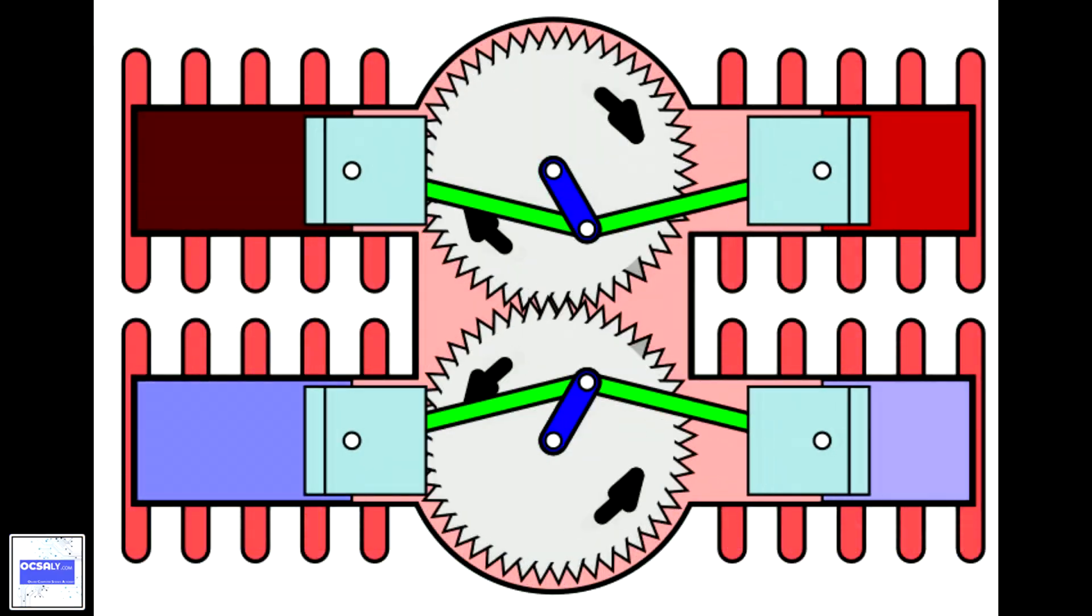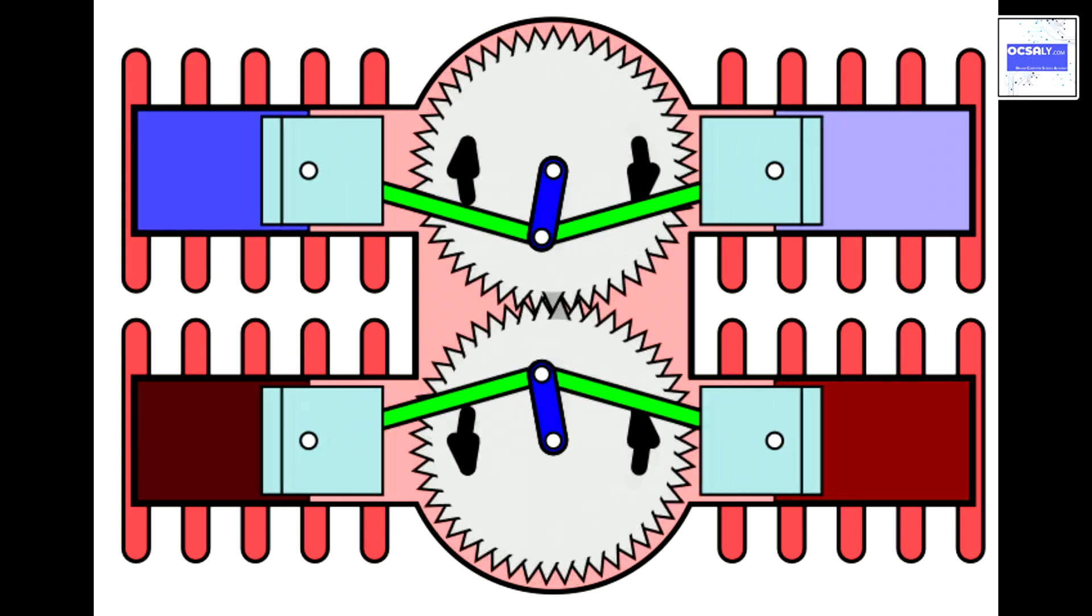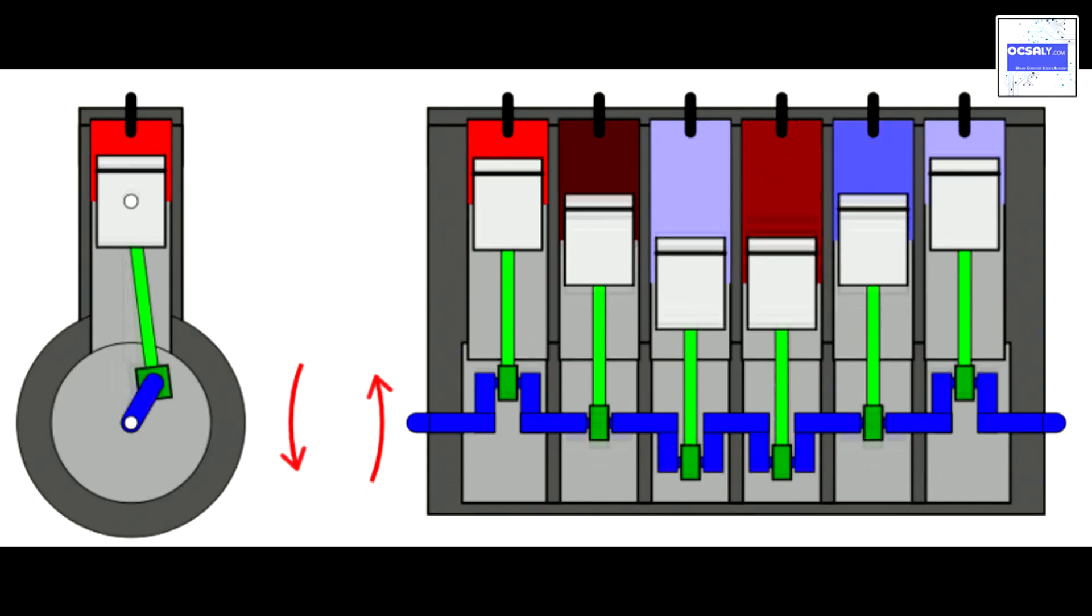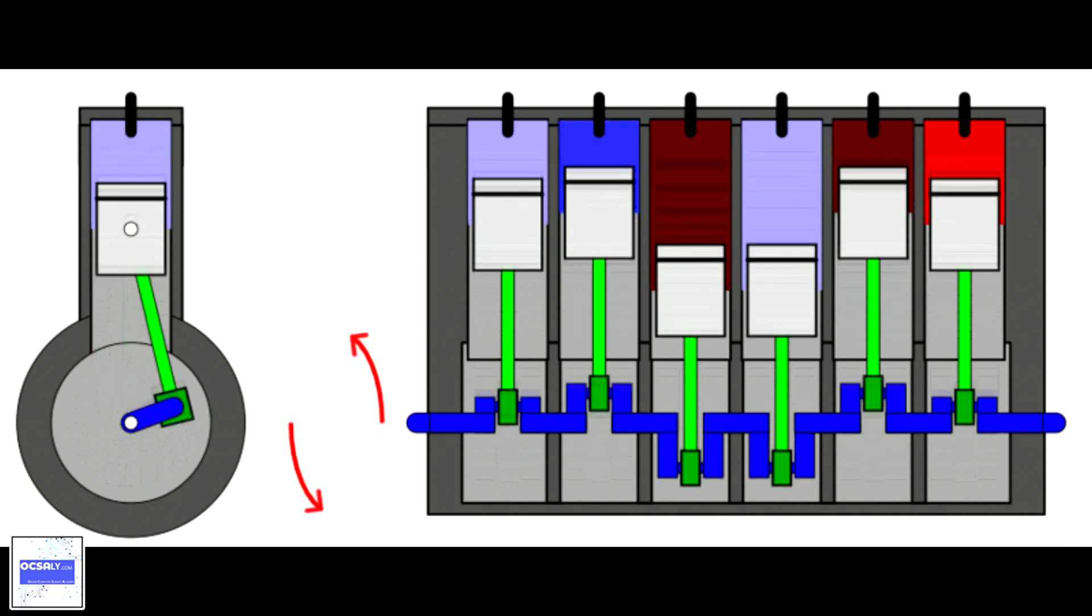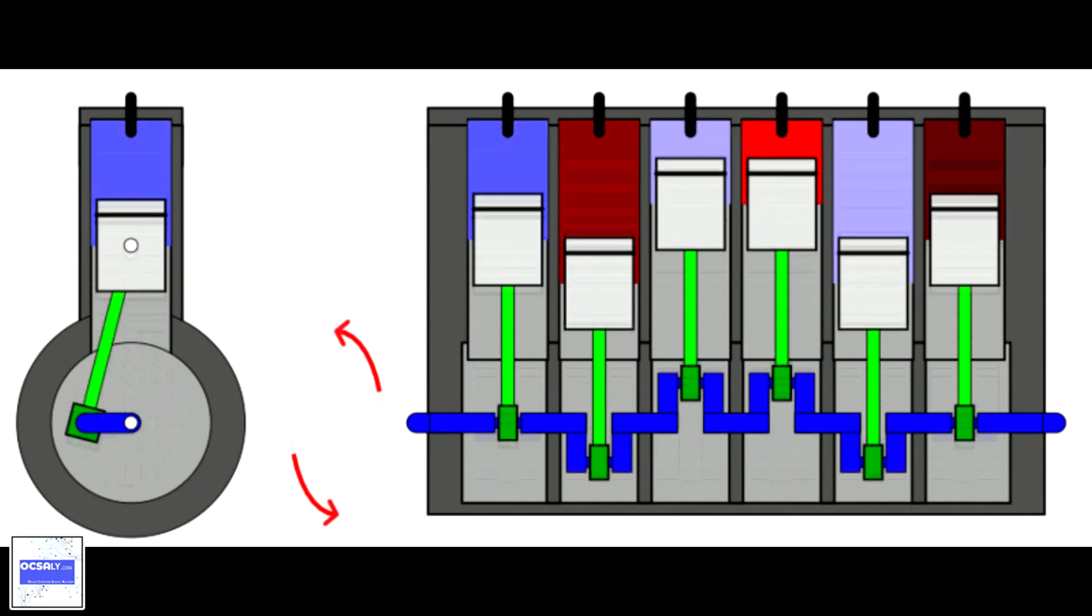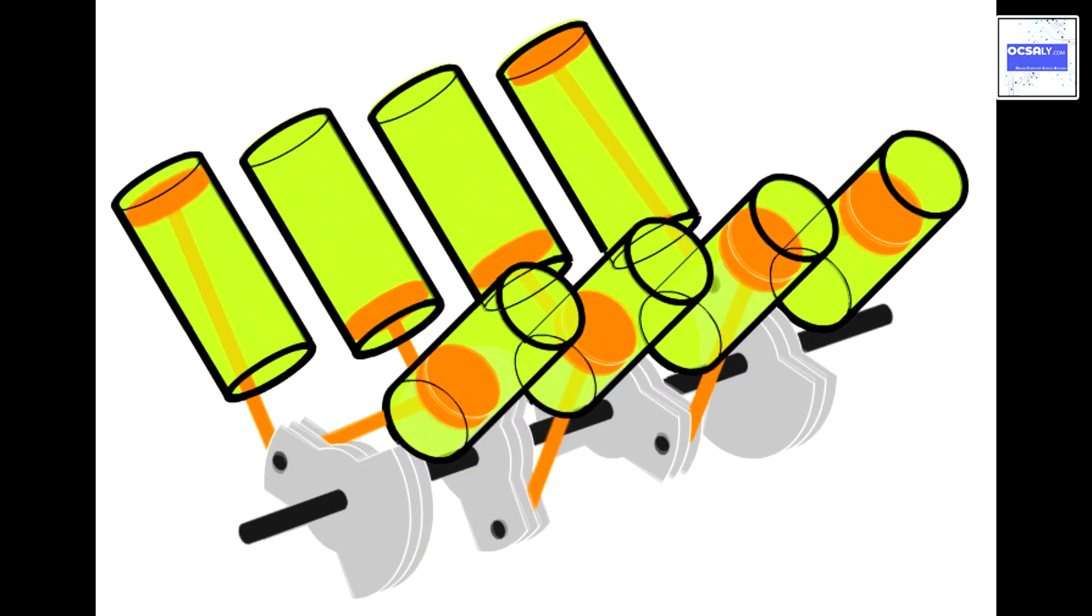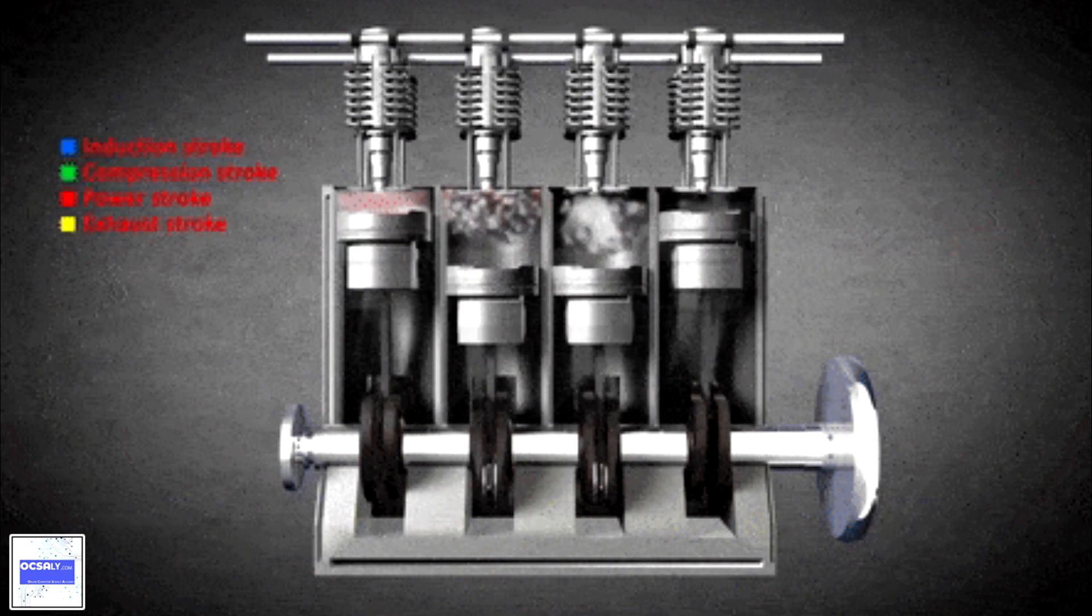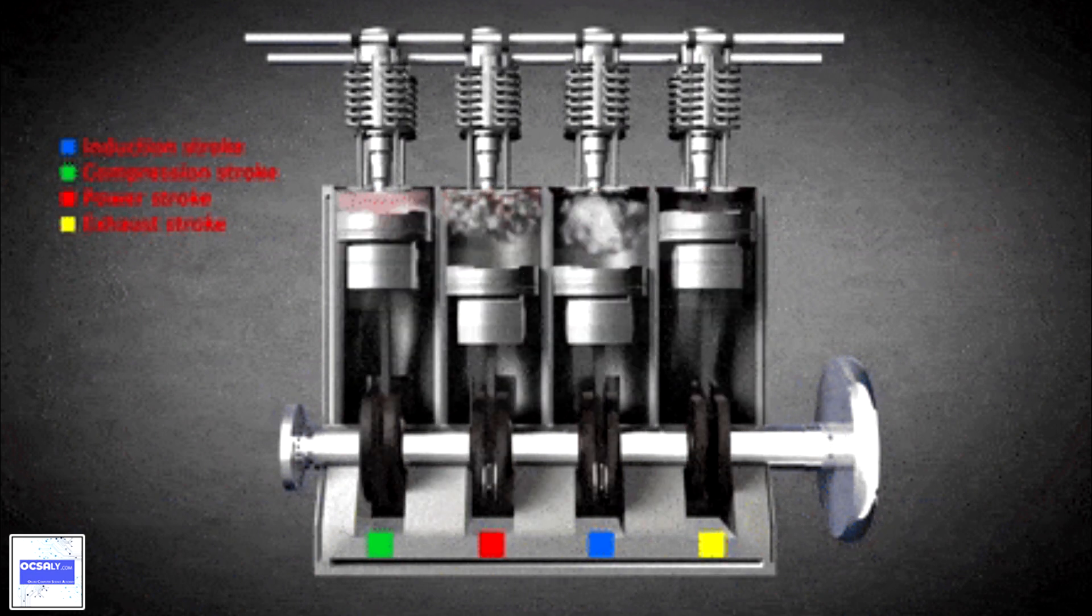Many modern four-stroke engines employ gasoline direct injection or GDI. In the gasoline direct injection engine, the injector nozzle protrudes into the combustion chamber. The direct fuel injector injects gasoline under very high pressure into the cylinder during the compression stroke, when the piston is closer to the top.